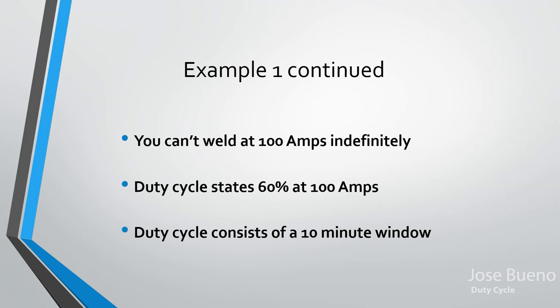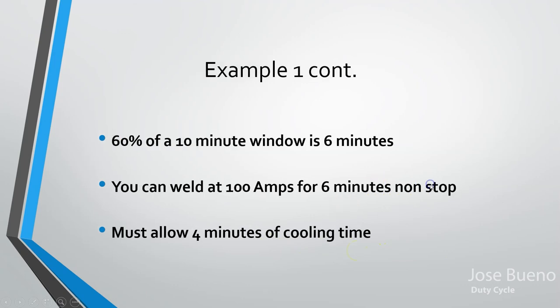The duty cycle states 60 percent at 100 amps. Since duty cycle consists of a 10-minute window, 60 percent of 10 minutes is six minutes. So if we set the machine to 100 amps, we can weld non-stop for six minutes — assuming your electrode is long enough or you're fast at changing them. Once you hit six minutes, you have to stop and allow the machine the rest of that 10-minute window to cool off.